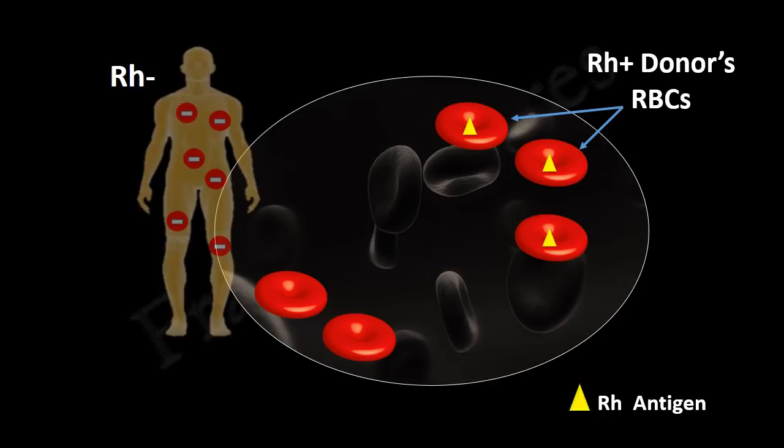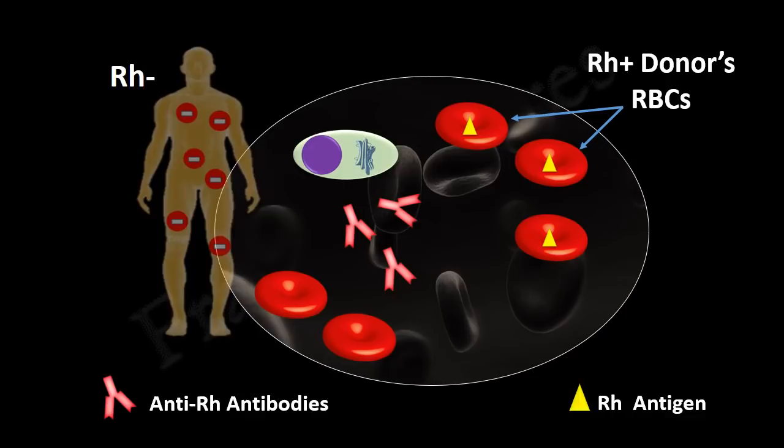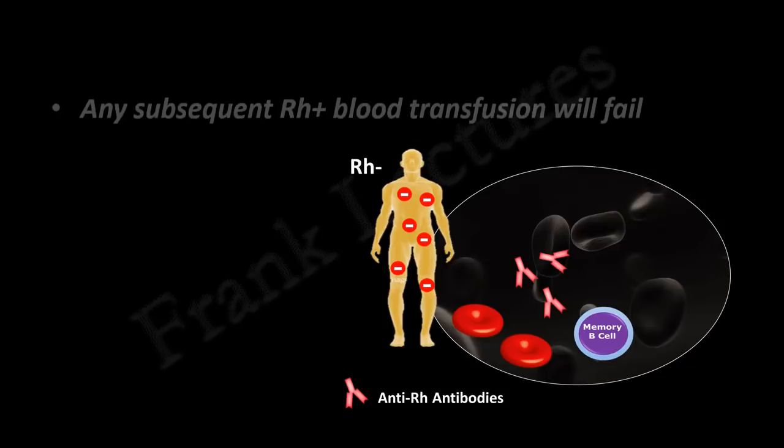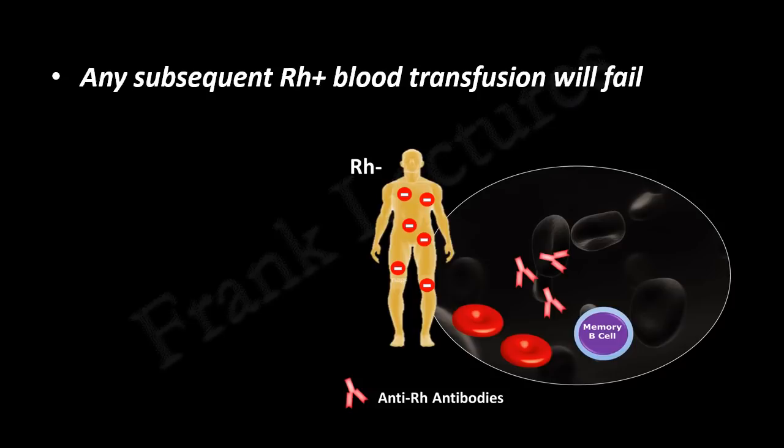As a result, anti-RH antibodies are produced and secreted by RH-specific plasma cells. RH-specific memory B cells are also produced. These antibodies will recognize RH antigen and bind to donor RBCs, resulting in the destruction of donor RBCs. Any subsequent transfusion of RH positive blood in this recipient will also fail.